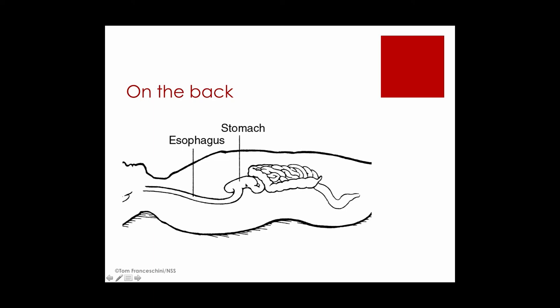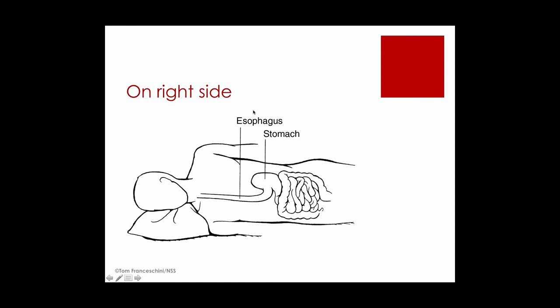When you lie on your back, your stomach is above the level of the esophagus. It's easy for the sphincter to open and allow acid to float backwards up into the throat. This is particularly true in back sleepers. If you lay on your right side, the same thing will be true — the stomach will be elevated above the level of the esophagus, making it easier for the stomach to empty during a transient relaxation.